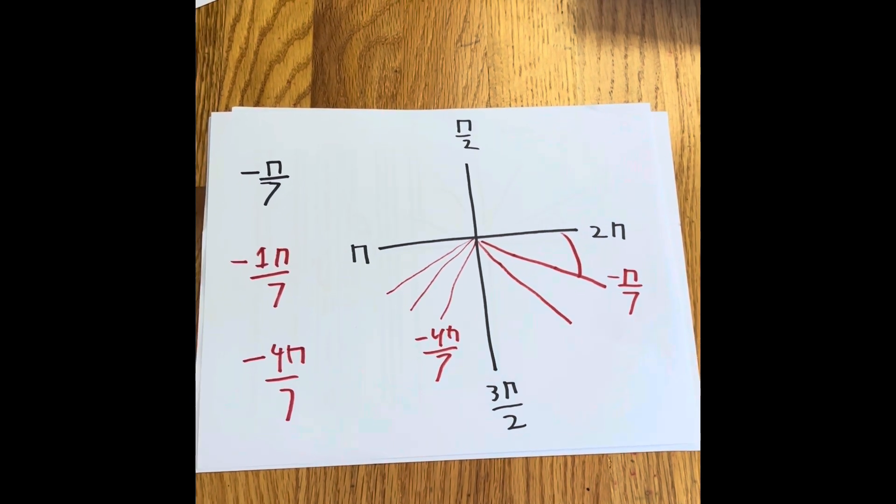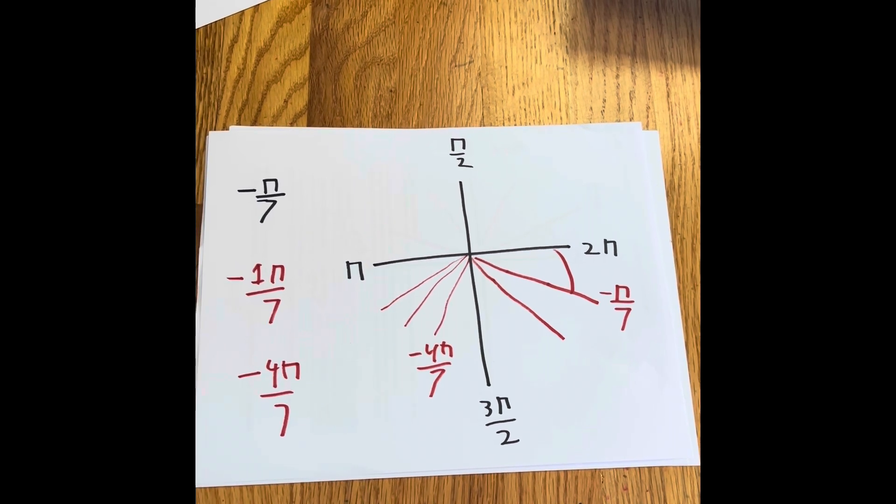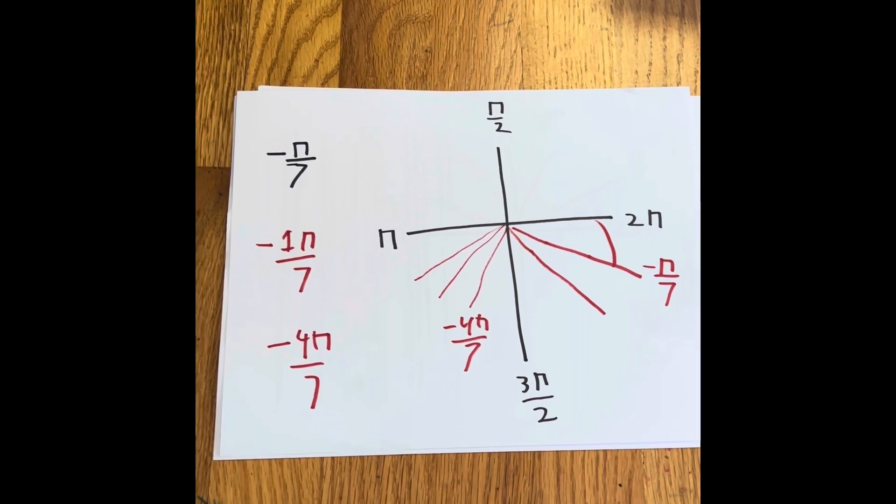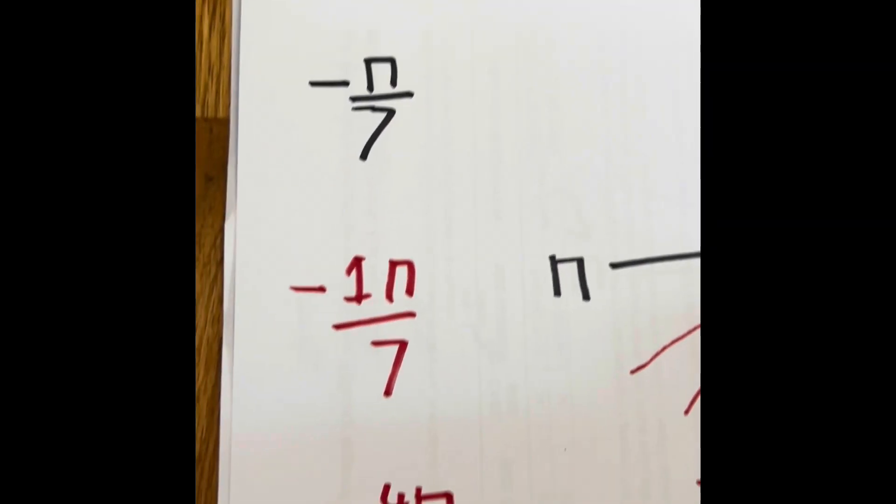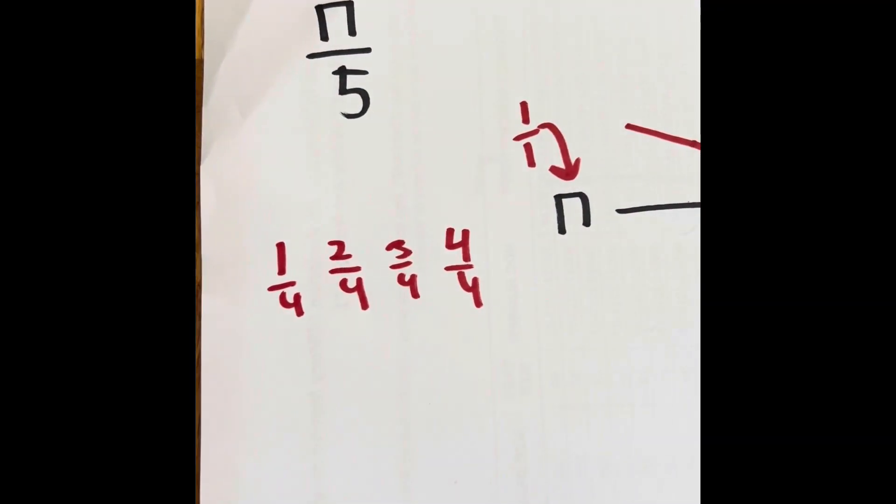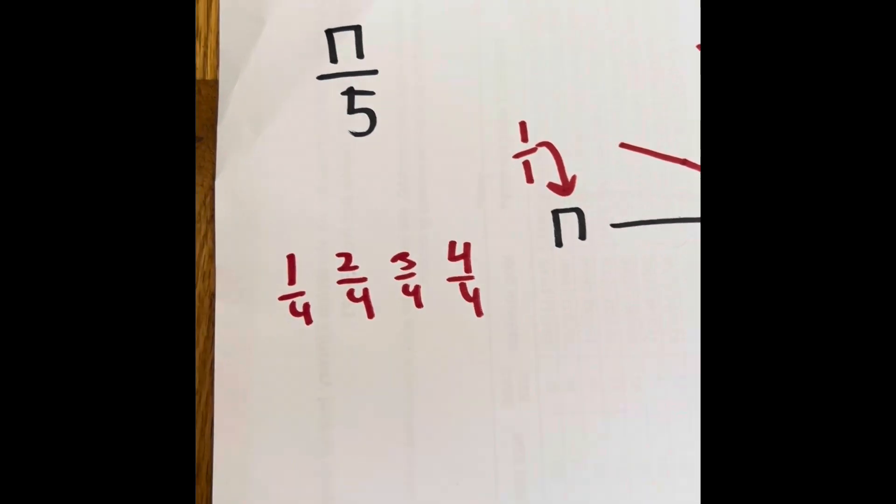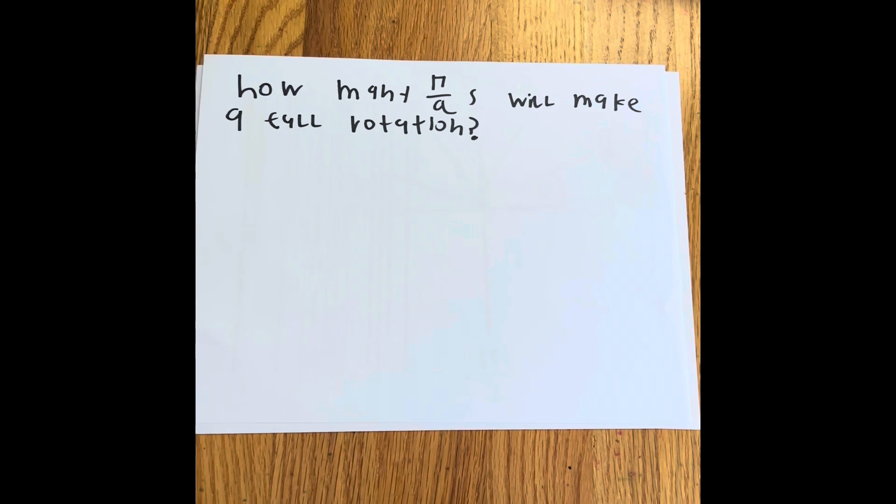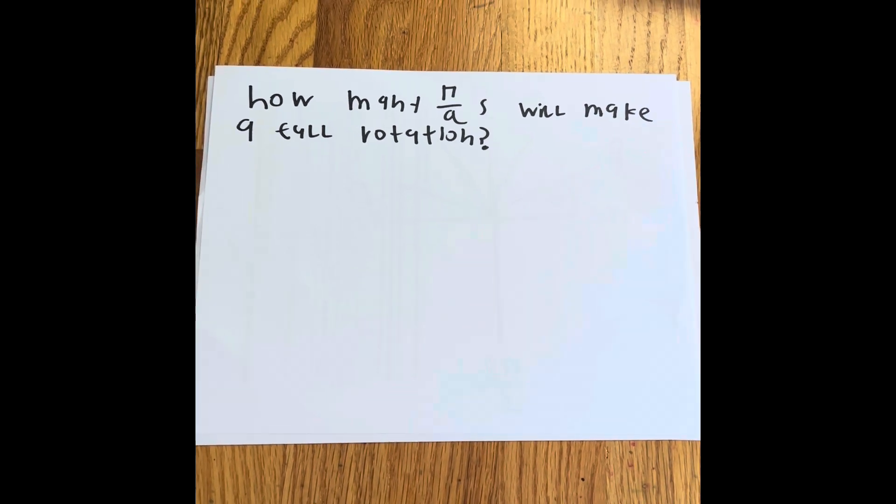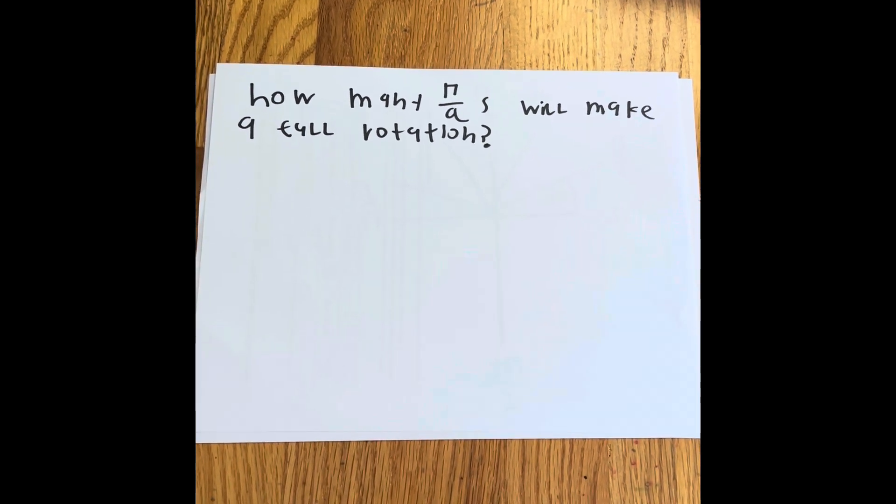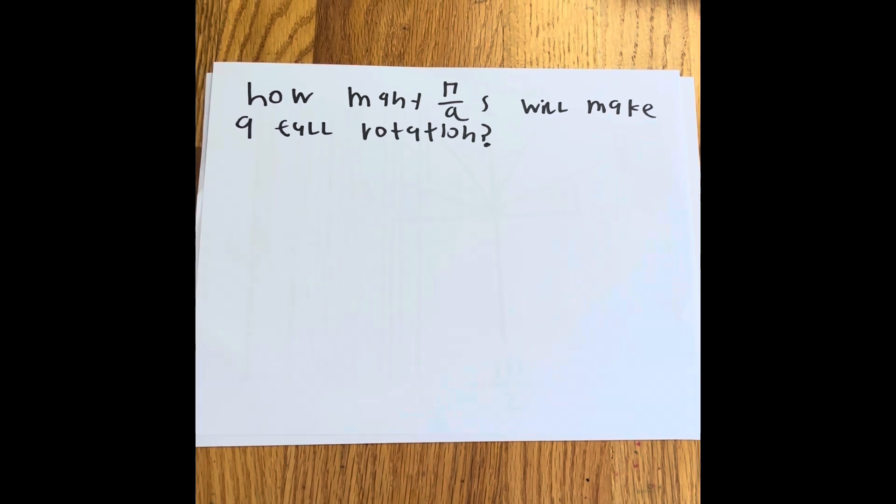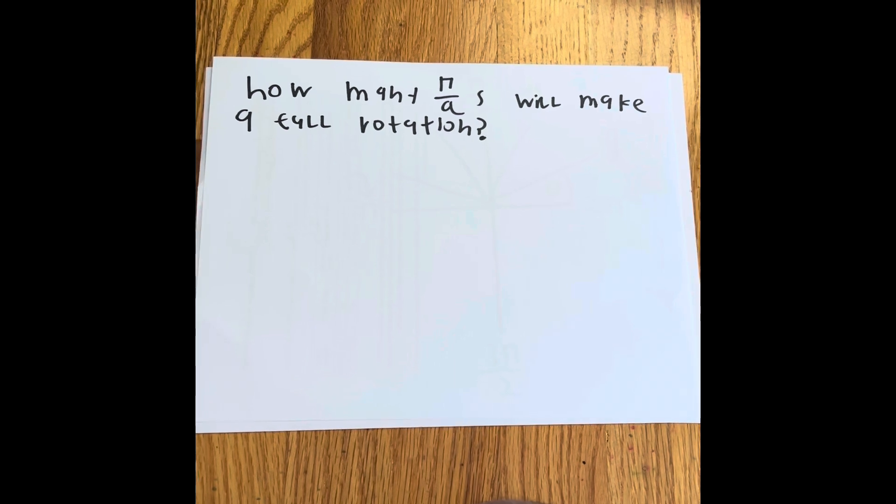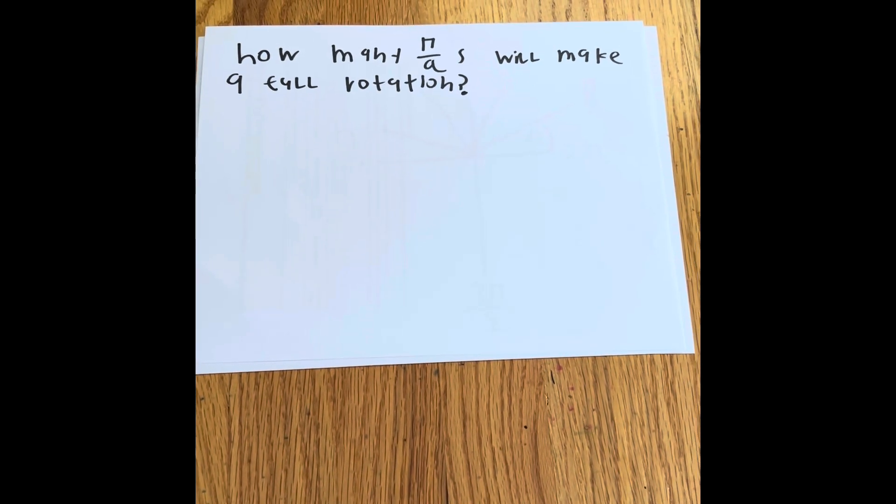But there is something that we should think about before moving on. Now sometimes there are more complex fractions. We've been playing around with the simple ones, just like this one and this one. But what happens if we try to ask this question right here: How many π divided by 9's would make a full rotation around the graph?